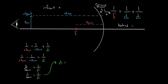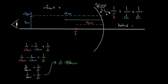It came out positive — that's important. Since the image distance is positive six centimeters, the image is going to be in front of the mirror, six centimeters from the mirror. But we don't know how big it's going to be or whether it's right-side up or upside down. To figure that out, we have to use the magnification equation.